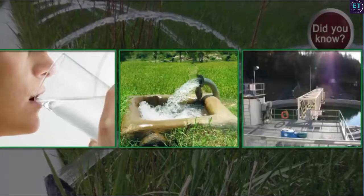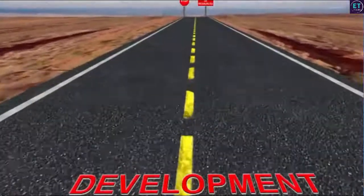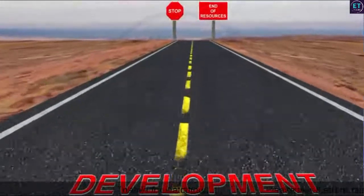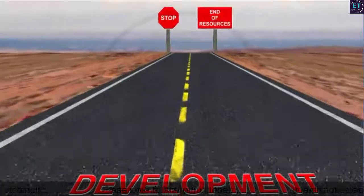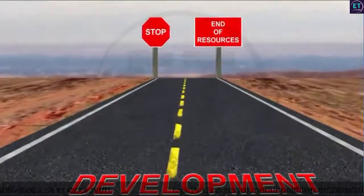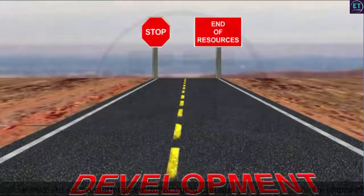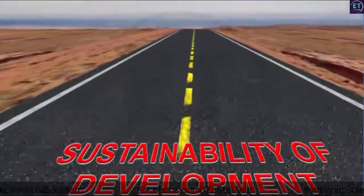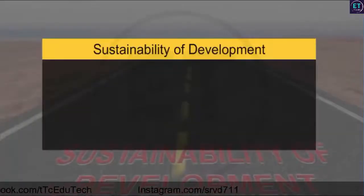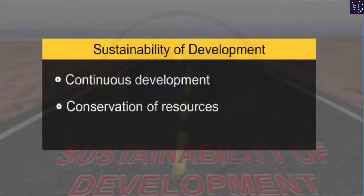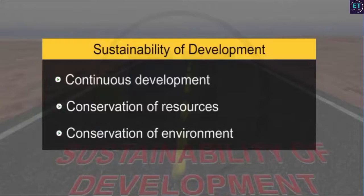If development continues at its present pace, there may be a time in the future when we may run out of resources, leading to a situation where no more development will be possible. This is where the concept of sustainability of development comes in. Sustainability of development involves finding ways for continuous development without the risk of running out of resources or causing irreparable damage to the environment.